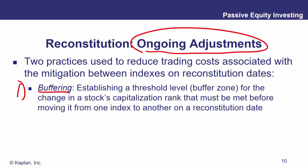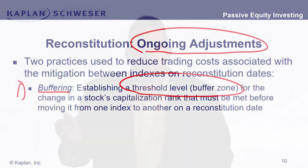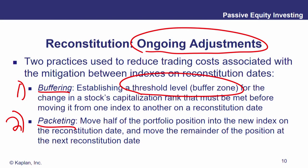To deal with reconstitution issues, we want to reduce trading costs and tracking error. One method is buffering — having a buffer zone or threshold for changes in a stock's capitalization rank that must be met before moving it. For example, if you're using the top 200 companies, it has to rank in the top 150 before you'll consider adding it. We can also package — move half the portfolio into the new index, and at the next reconstitution date, remove the remainder if it still applies. Buffering and packaging are two ways to reduce trading costs.